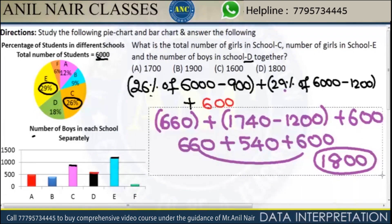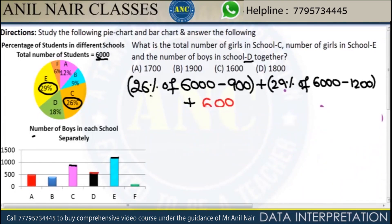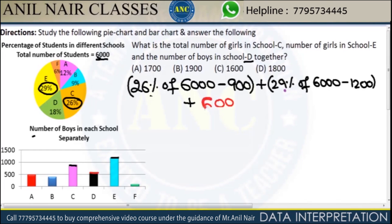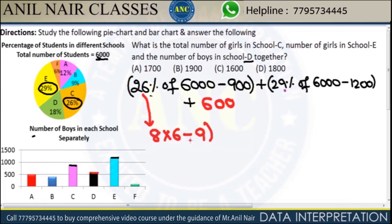Why use all these methods? There is a beautiful concept in the world of mathematics called digital sum. I believe most students know the digital sum concept. Apply digital sum: 26 digital sum is 2 plus 6, which is 8. 8 into 6000 — digital sum is 6. Minus 900 — digital sum is 9.